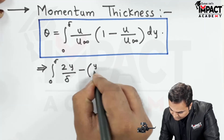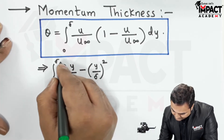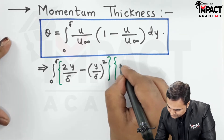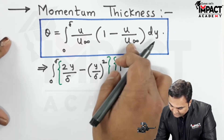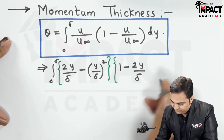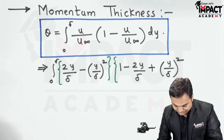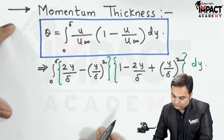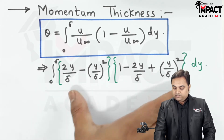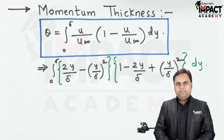Expanding the brackets, the integrand becomes (2y/δ − (y/δ)²) multiplied by (1 − 2y/δ + (y/δ)²) dy. Solving this integration manually would be very cumbersome and error-prone, so the calculator shortcut will be used.